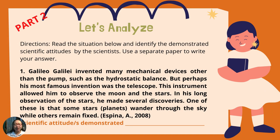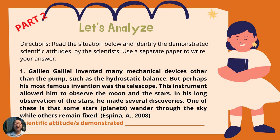Let's analyze part two. Read the situation and identify the scientific attitude demonstrated by the scientist. Number one: Galileo Galilei invented many mechanical devices other than the pump, such as the hydrostatic balance, but perhaps his most famous invention was the telescope. This instrument allowed him to observe the moon and the stars. In his long observation of the stars, he made several discoveries — one of these is that some stars wander through the sky while others remain fixed. What scientific attitude is demonstrated?